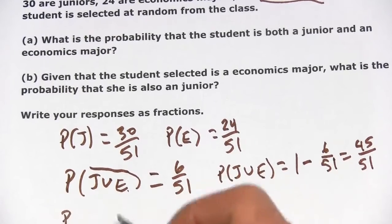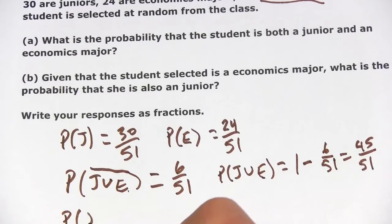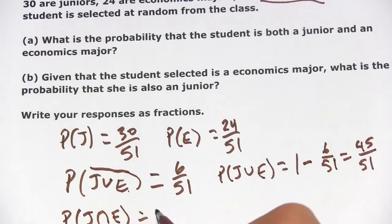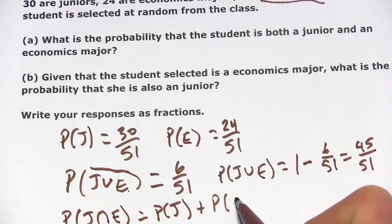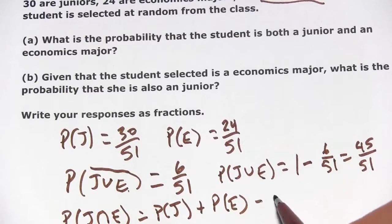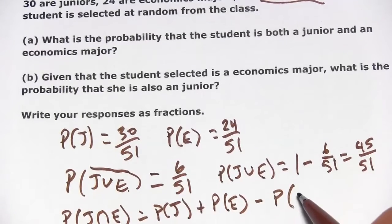And with that formula, we can write it this way. We can say the probability of the intersection of two things is the probability of the first thing plus the probability of the second thing minus the probability of the union of those two things.